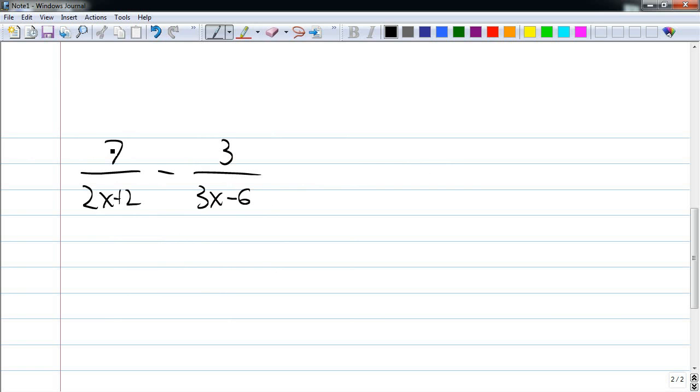I'll handle the numerators in a second. Now as it so happens in this example, there isn't much to factor. But even if there was, I would hold off on factoring anything in my numerators. However, to get a common denominator here, I absolutely need to factor what's in the denominators.